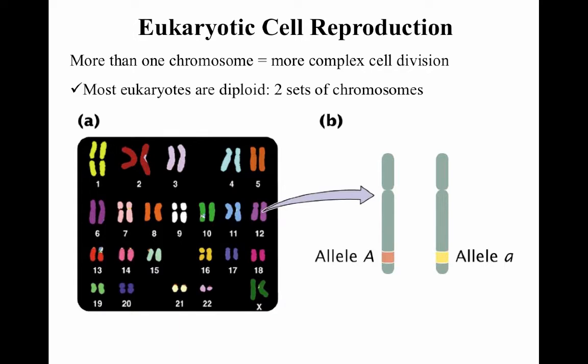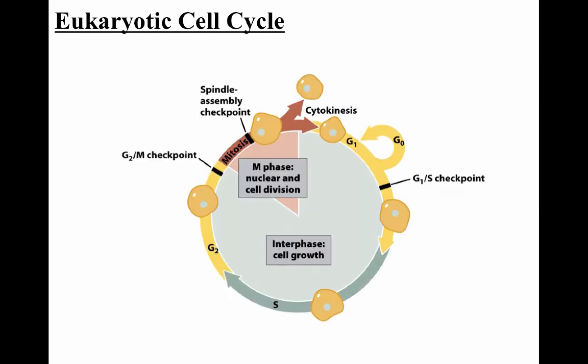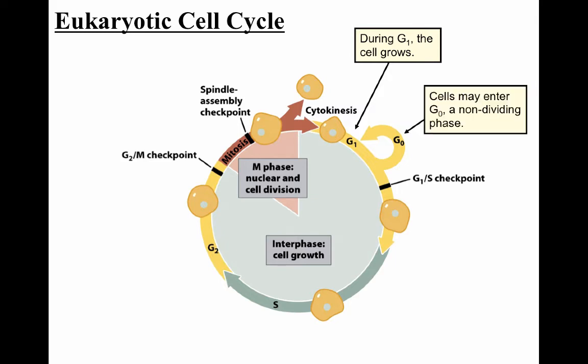Eukaryotic cells are more complex because they have more than one chromosome. Chromosomes tend to come in pairs — humans have 23 pairs, cattle have 30 pairs — so there's a lot of genetic material that has to be copied at one time. In the eukaryotic cell cycle, the cell starts in the G1 phase, where it will grow and get bigger and all those intracellular organelles will develop.